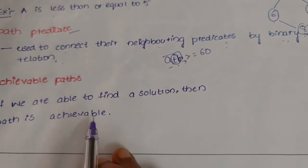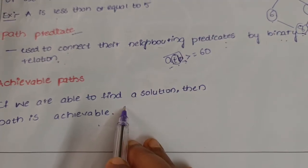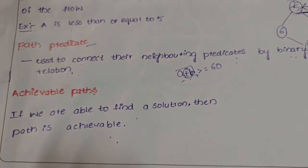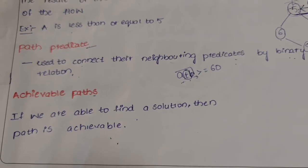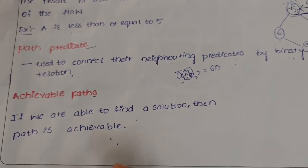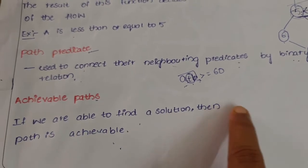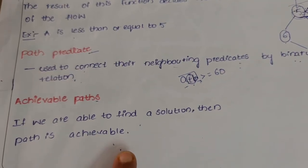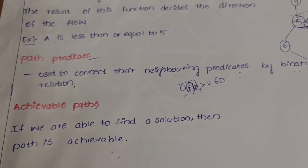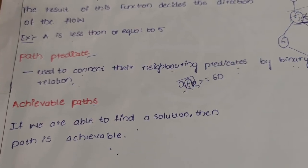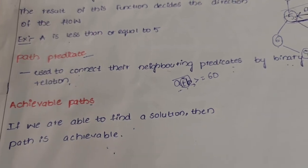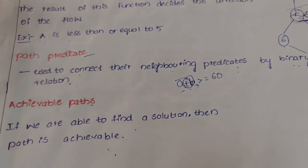Achievable paths are nothing but paths where we are able to find a solution. If it is successful we say it is achievable; if it is unsuccessful we say it is not achievable. In any program there can be many paths — if we find one path that leads to the correct solution, then it is known as an achievable path.